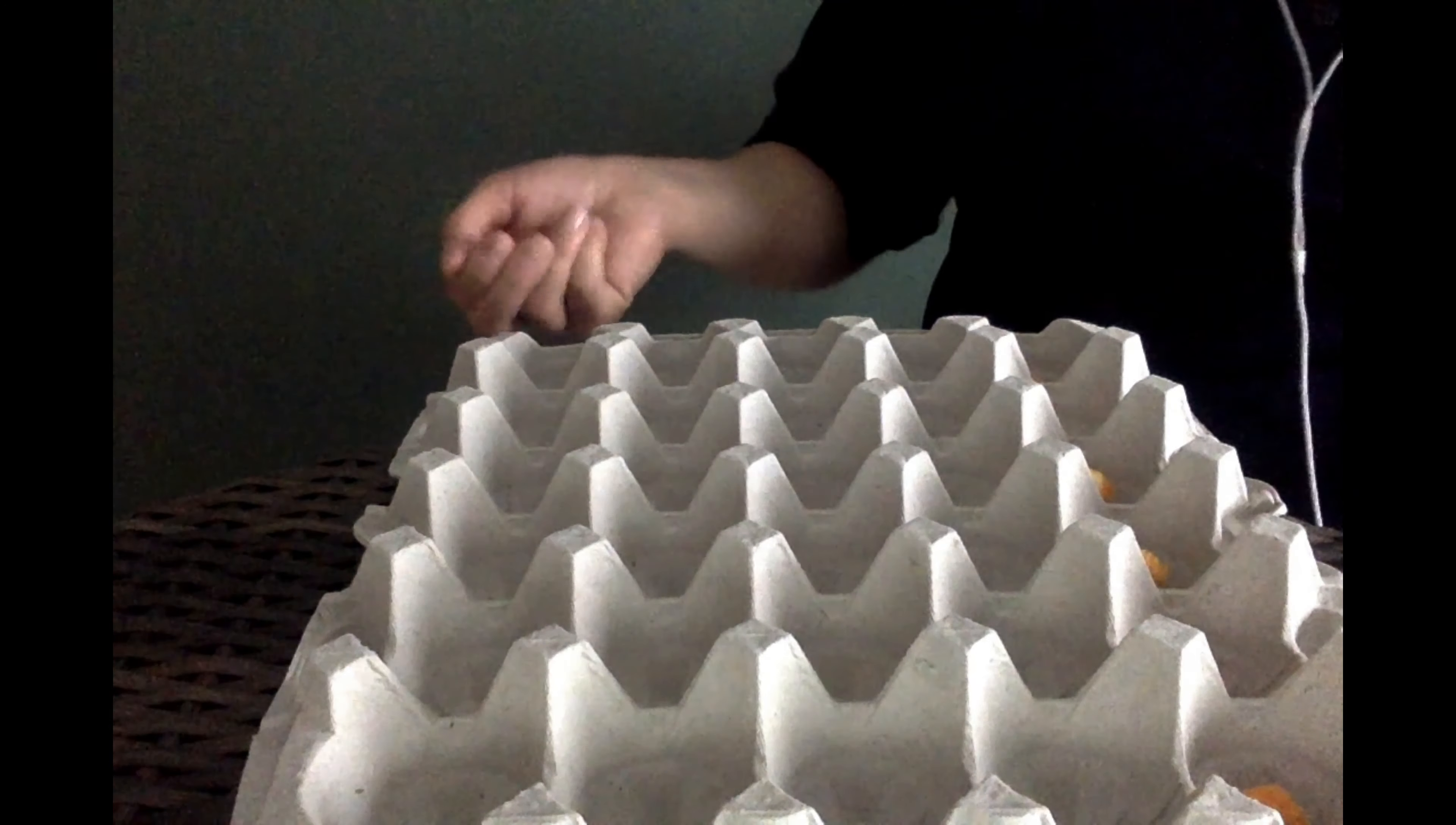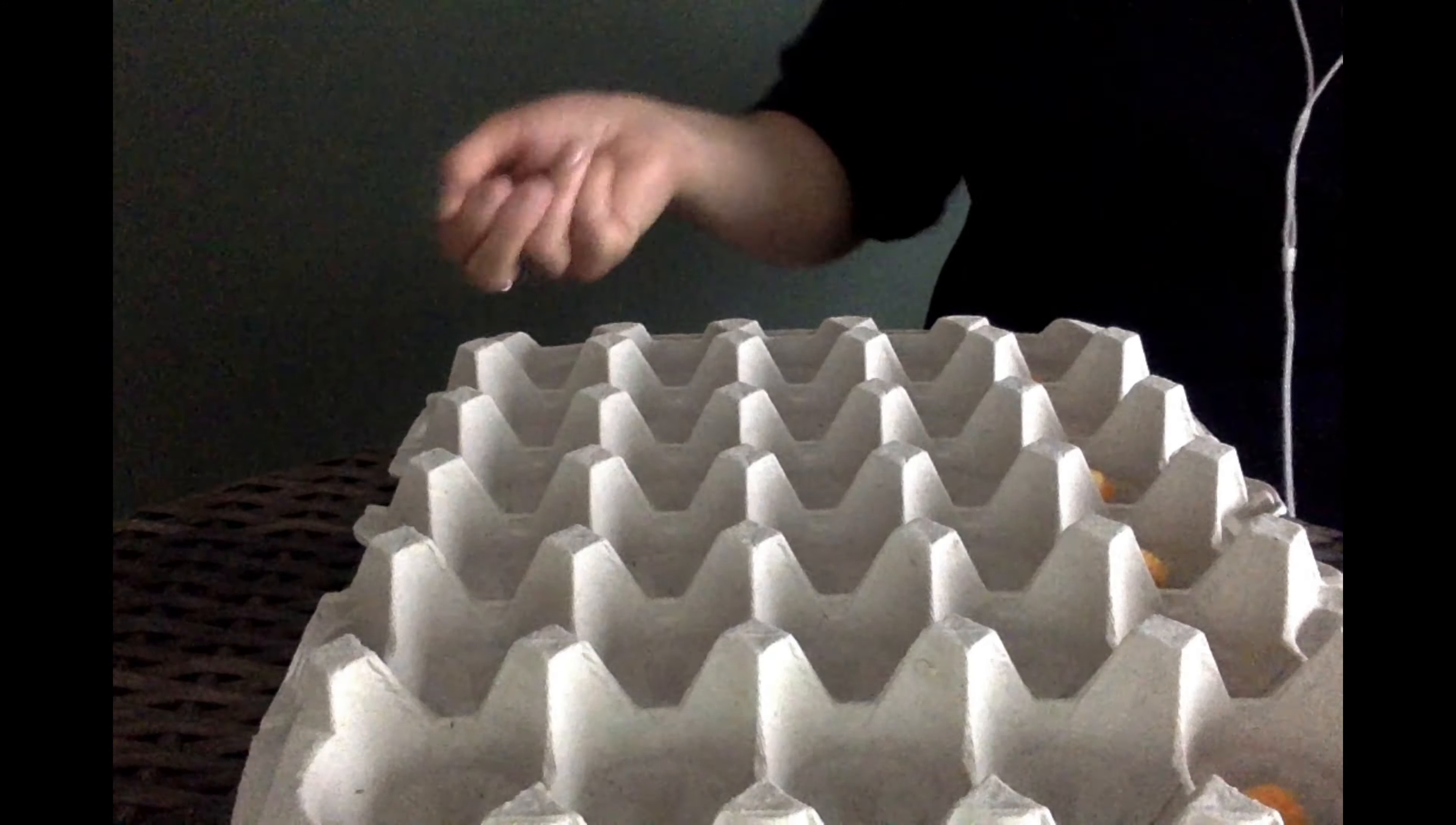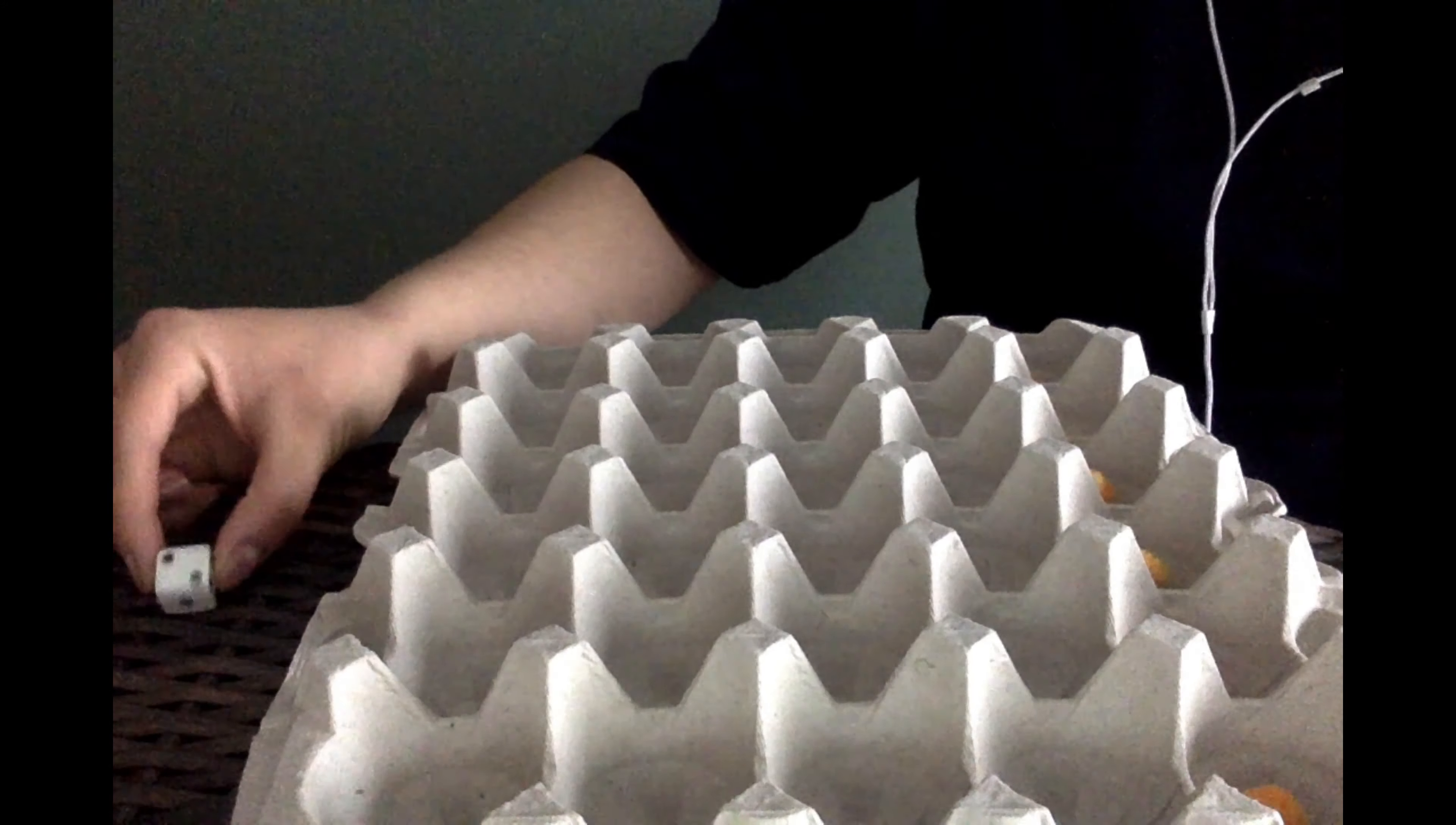Now let's roll the dice and see how many pollen we're going to move to the other side of the crate. Two. We're going to move two over. Here we go. One, two.